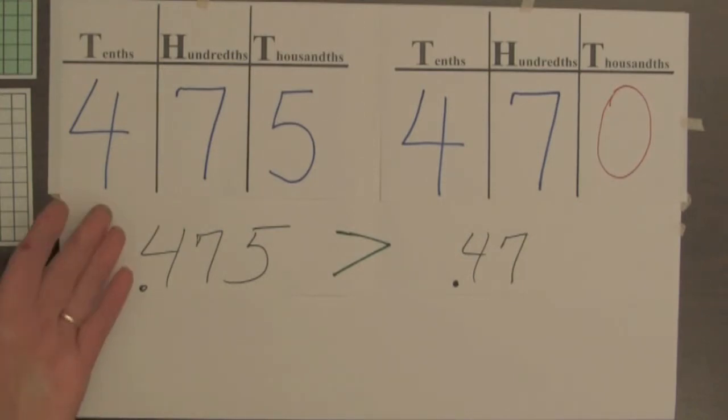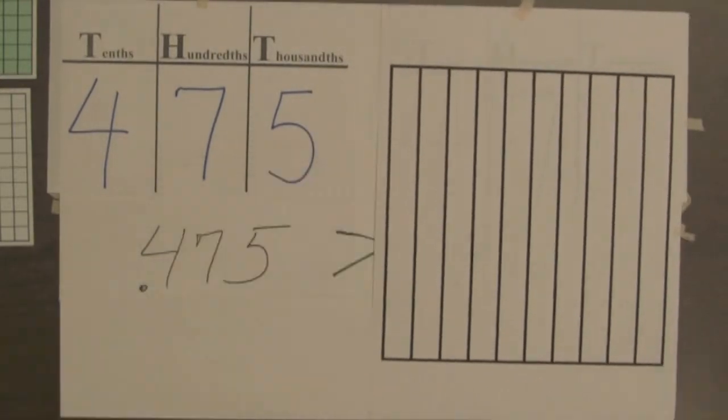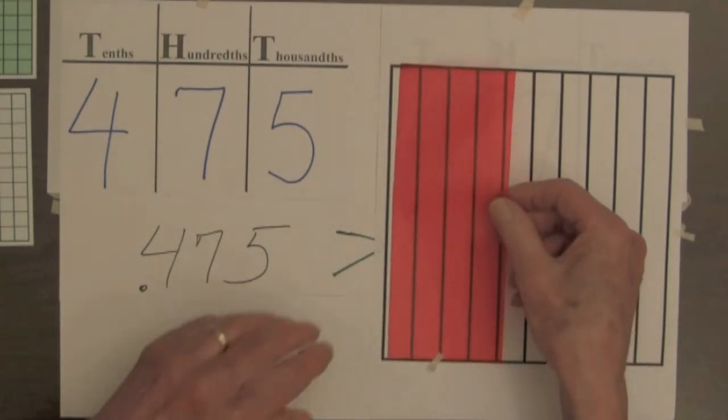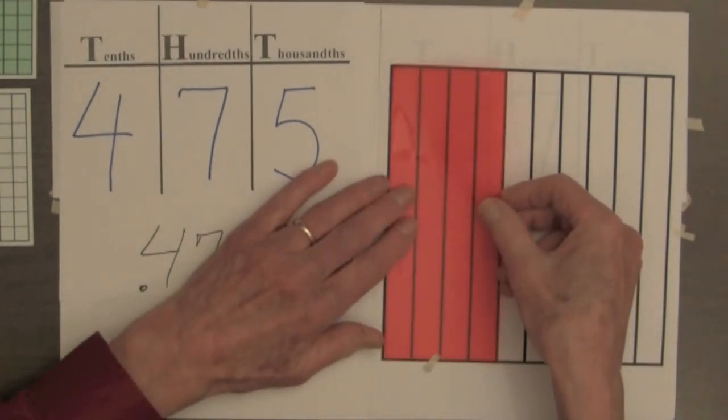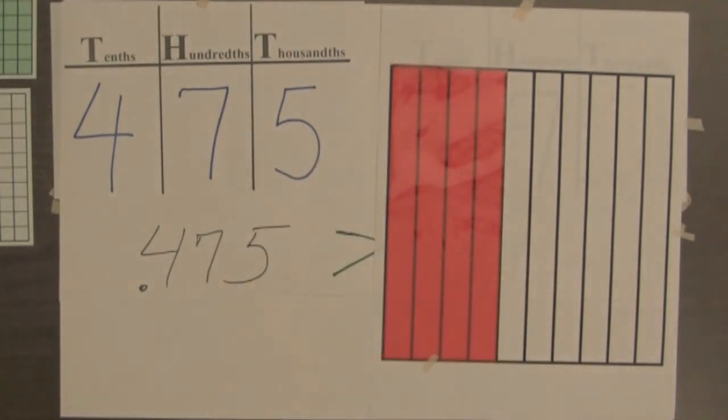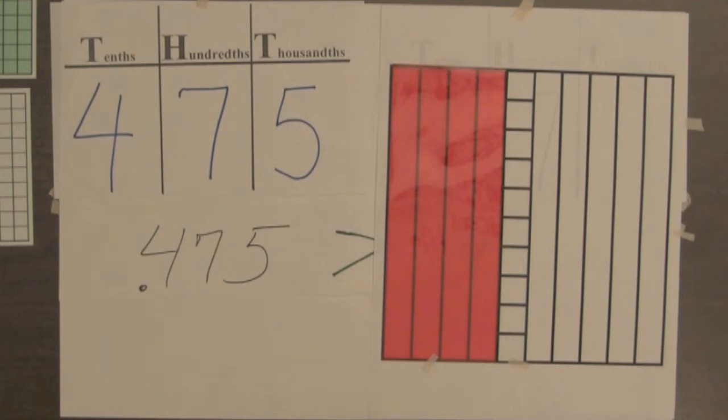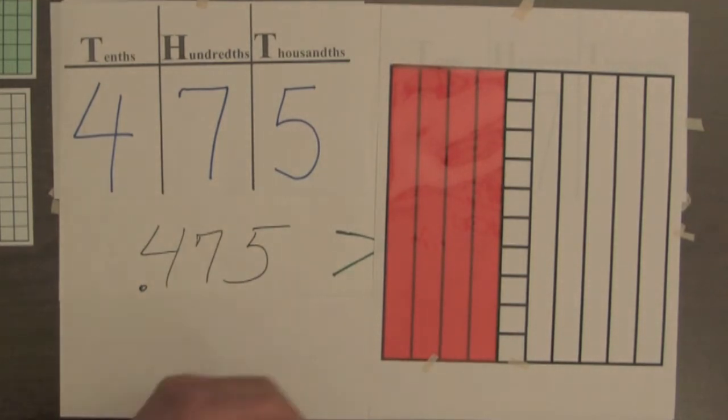Let's connect the place value table for four hundred and seventy-five thousandths to its decimal square. The four in the tenths place tells us there are four full columns of the tenth square, so we'll shade four of those columns. The seven in the hundredths place tells us that there are more than four full columns shaded, but not enough for five. So we divide the next column into ten equal parts and shade seven of them.